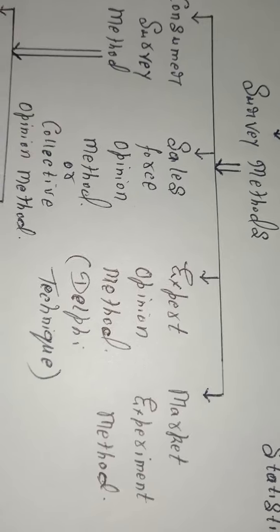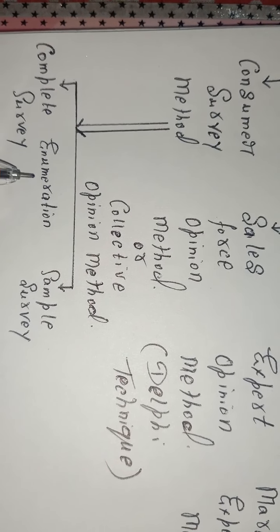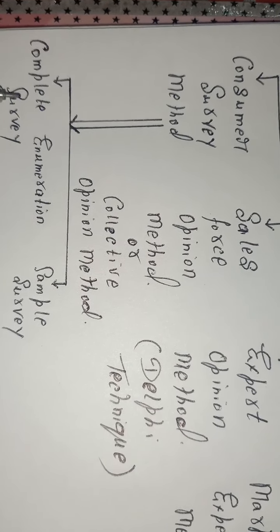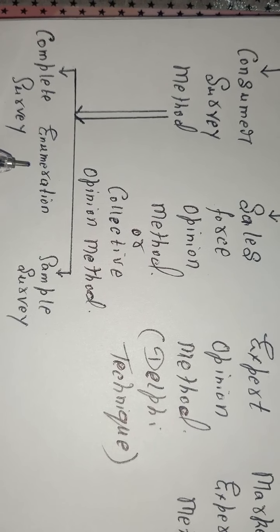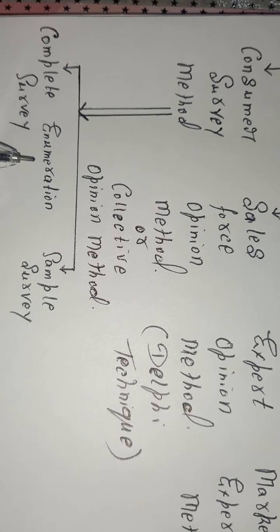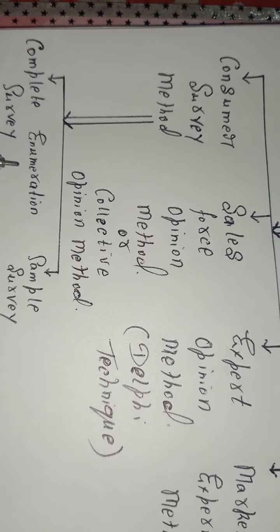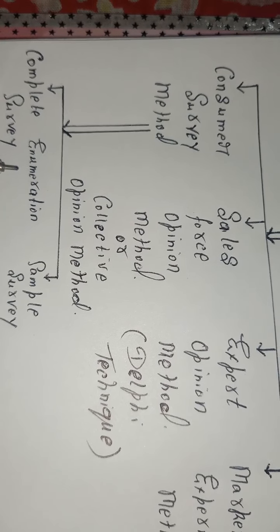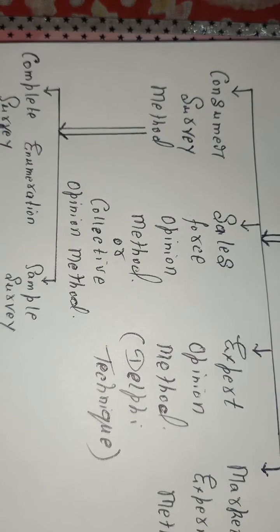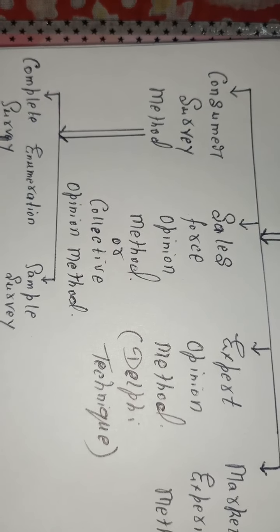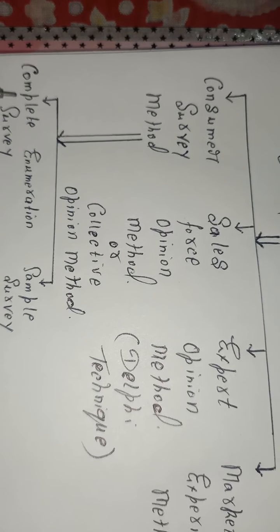This method is divided into two parts: complete enumeration and sample survey. Complete enumeration means all the consumers in the market are included in the survey. For example, the census survey conducted by the Indian government every ten years collects data on each and every person across the country. Similarly, when a company collects information about all the consumers in the market to get an idea about the future demand of the product, that is known as complete enumeration.